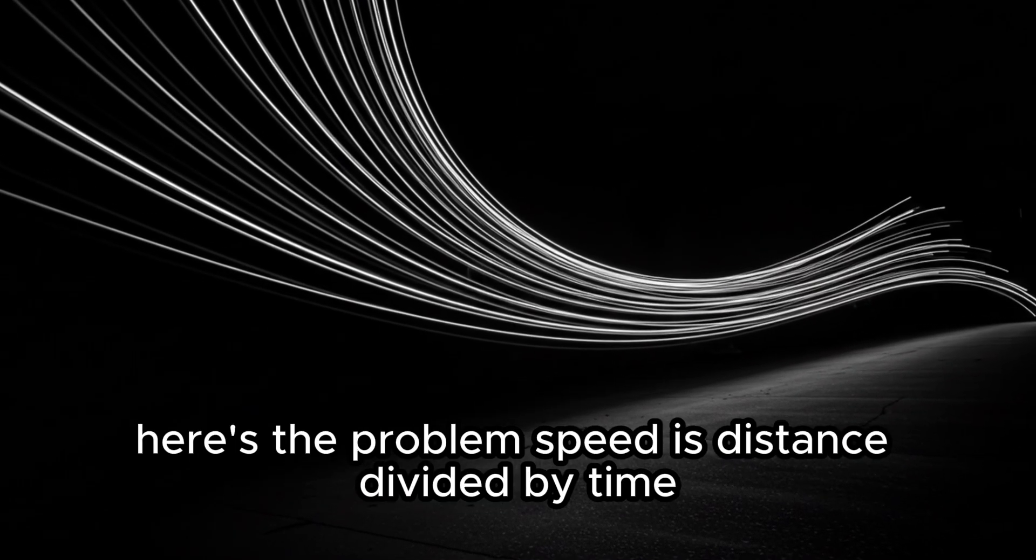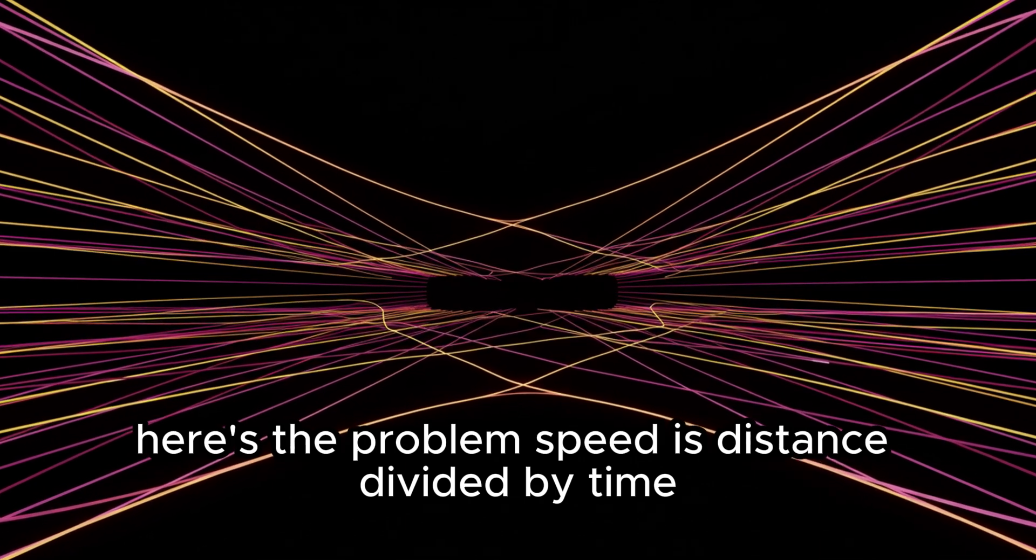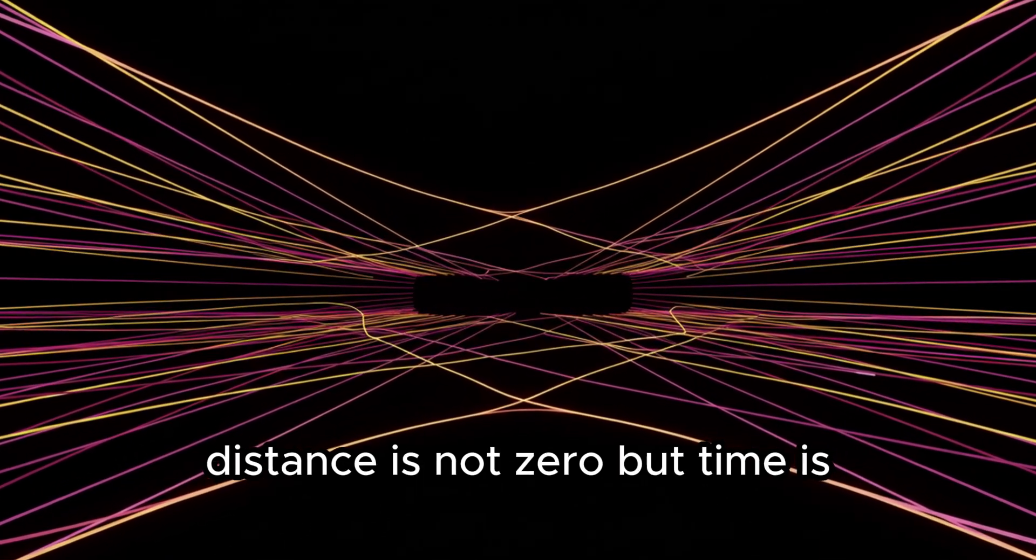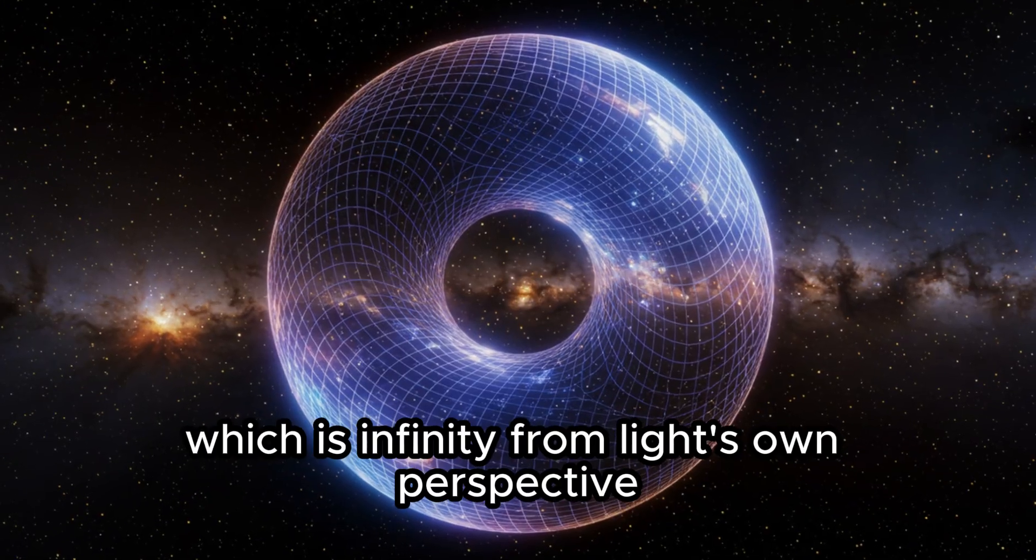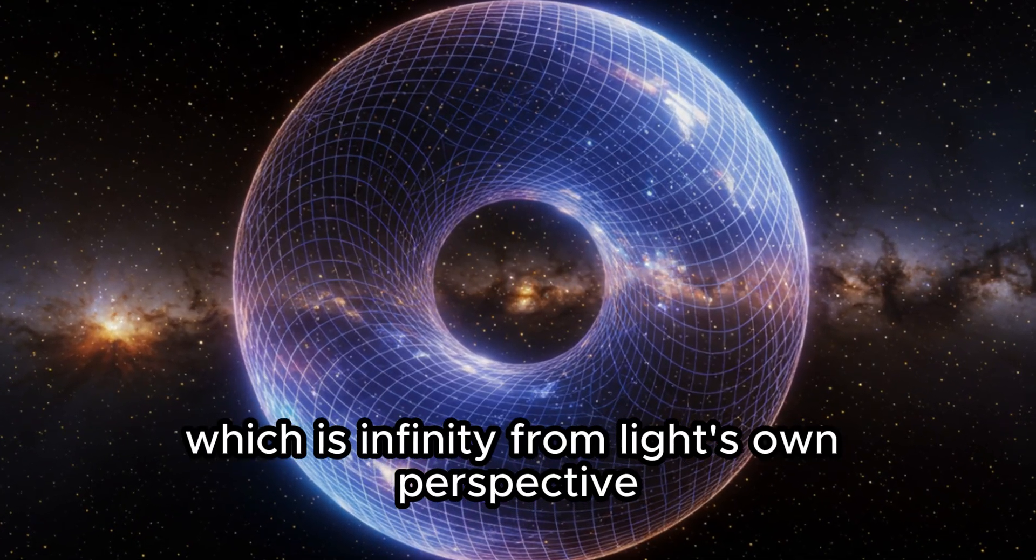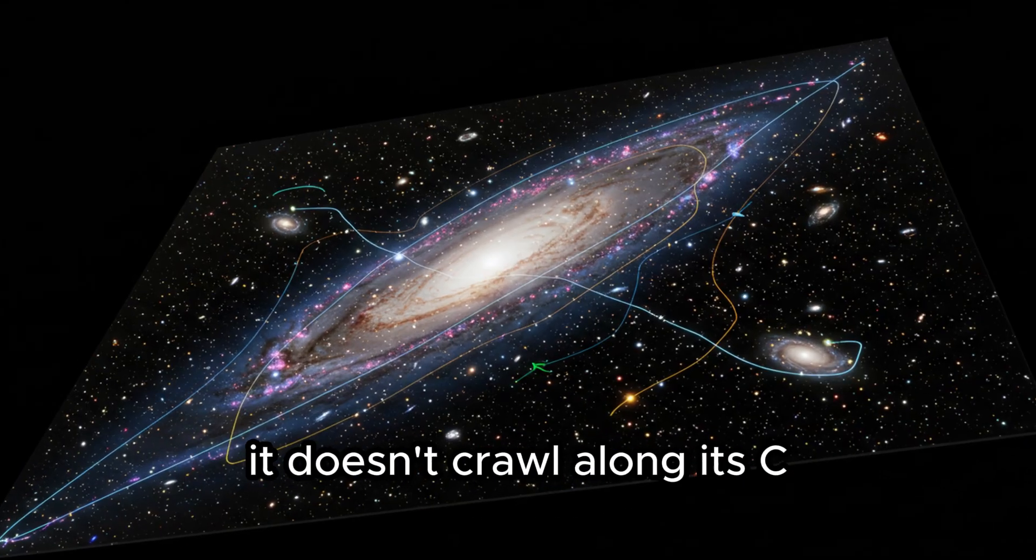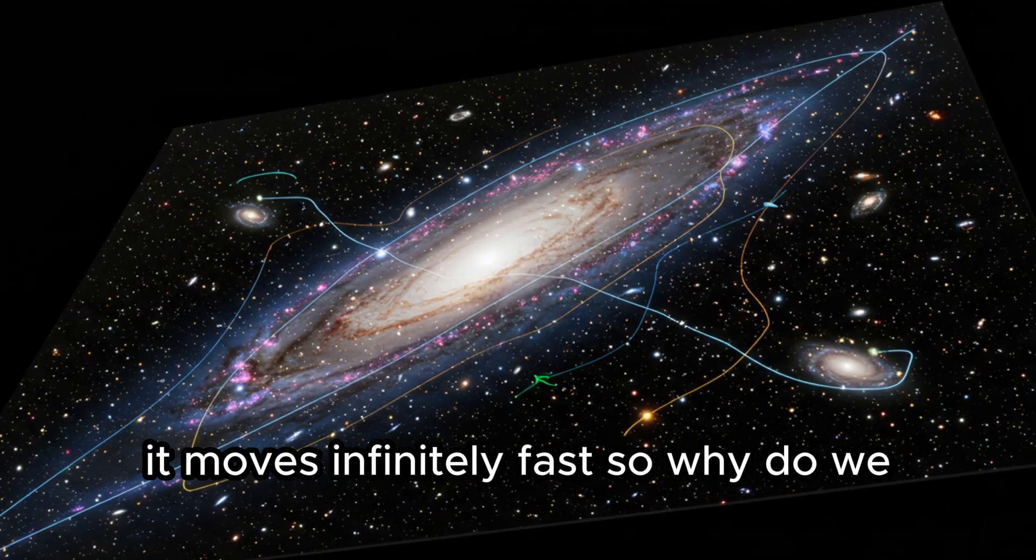Here's the problem. Speed is distance divided by time. Distance is not zero, but time is. That gives you distance divided by zero, which is infinity. From light's own perspective, it doesn't crawl along at c. It moves infinitely fast.